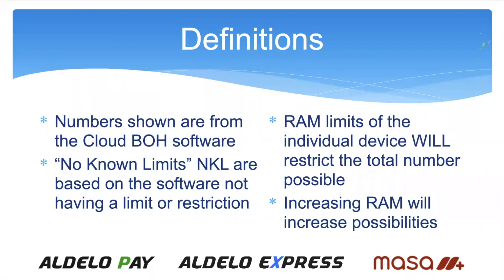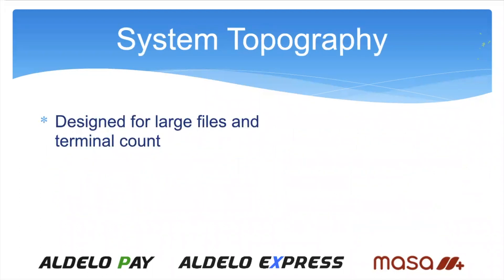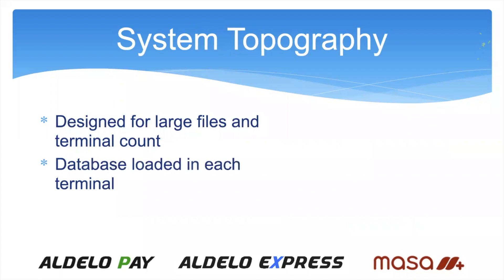Let's talk about a little bit of the system topography and how we designed it. It was designed for large files and large terminal counts — not a 2, 3, or 4 terminal system, but a very large terminal count, and that has been indicative of what we found we have. The database is loaded on each terminal, so it does reside with each terminal. That gives it a lot of flexibility: we don't have to go to the cloud to get an item to ring up, and we don't send print jobs to the cloud. Everything is loaded at the store level and at the terminal level.